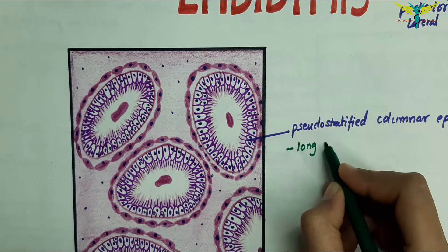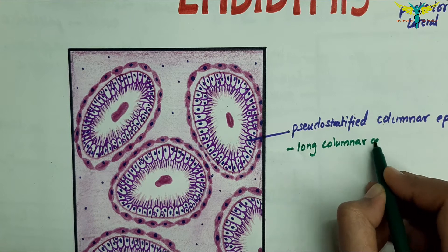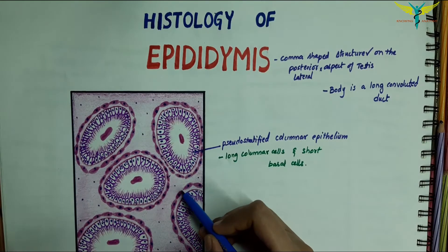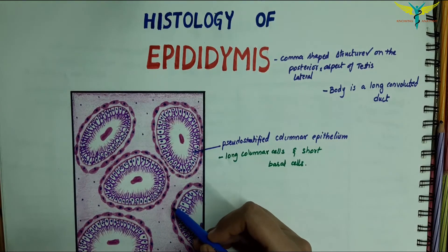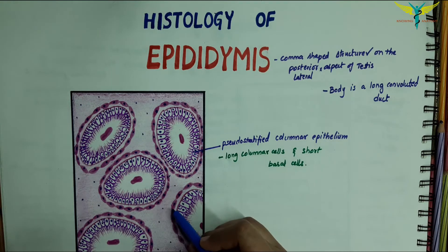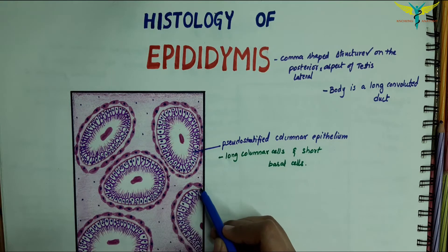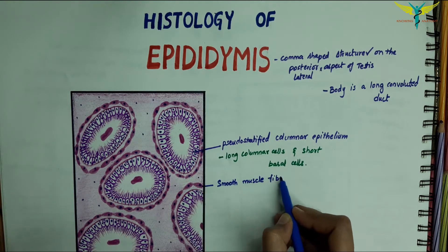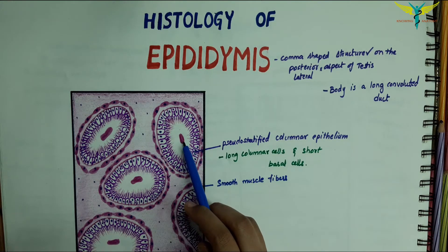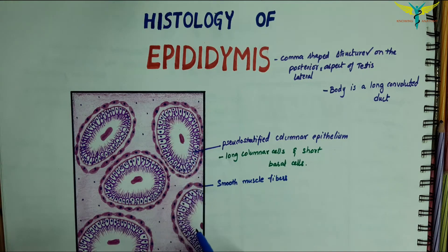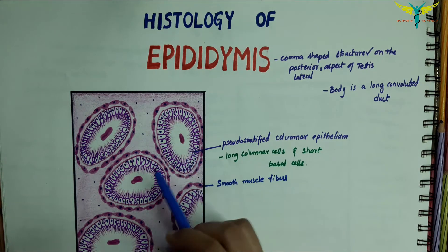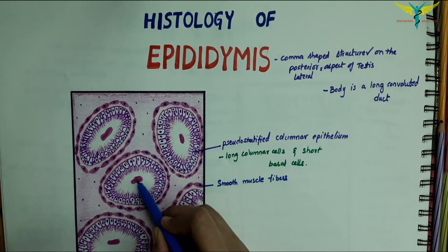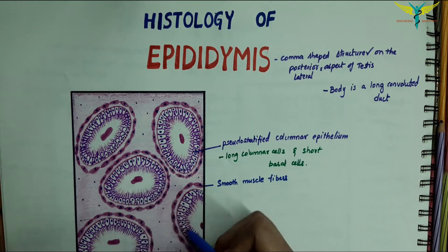The smooth muscles are present in the wall of the duct — you can note the smooth muscles here. Columns of spermatozoa are present in the lumen of the duct; these are the clumps of spermatozoa.